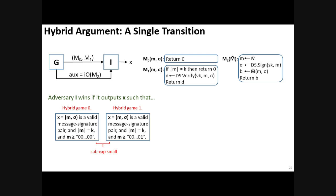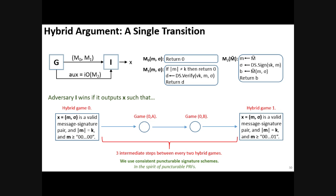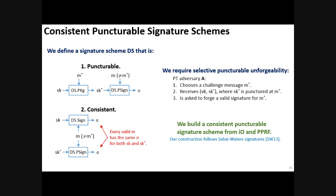Now, in fact, each of the transitions, each of the exponential number of transitions in this hybrid game consists of three transitions itself, meaning there are two more games in between. For these games, I need to introduce consistent puncturable signature schemes which we define and build, and then I will return back and show how these transitions happen.